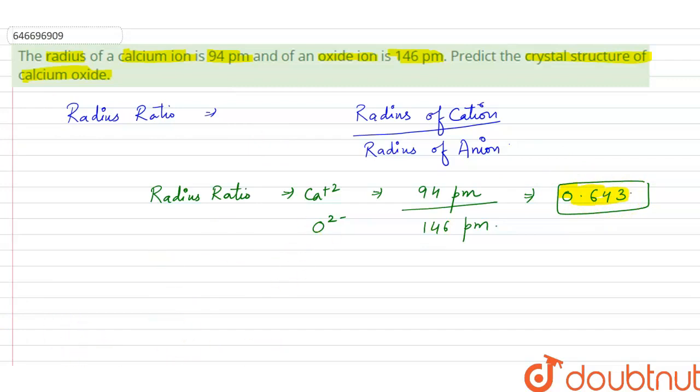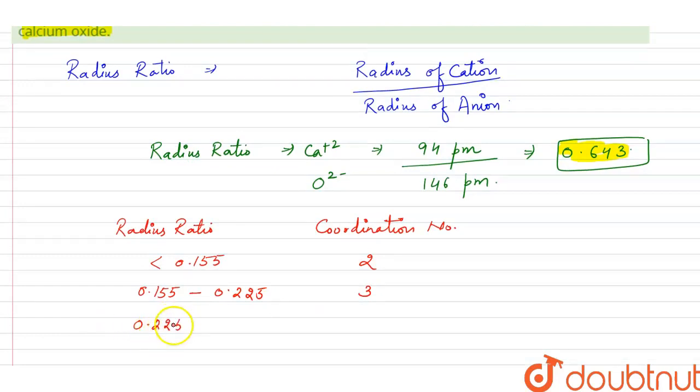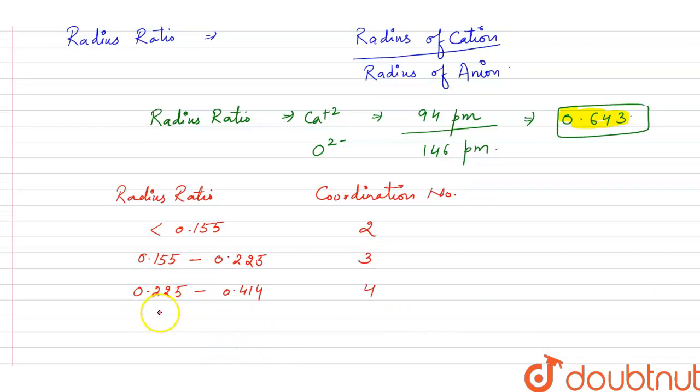Now we should remember the following table. This is the radius ratio and this is coordination number. If radius ratio is less than 0.155, coordination number will be 2 and geometry is linear. If coordination number is from 0.155 to 0.225, coordination number will be 3. From 0.225 to 0.414, coordination number will be 4 and geometry will be tetrahedral. And if coordination number is in the range from 0.414 to 0.732, coordination number will be 6 and geometry will be octahedral. So our radius ratio lies in between this, coordination number 6.